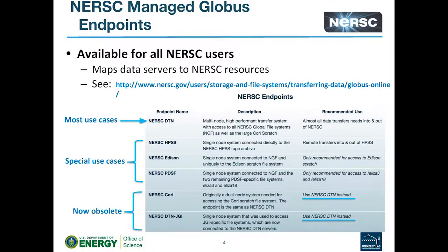There are a bunch of different endpoints, but most of the listed ones are no longer valid since we don't have Edison or PDSF anymore. You should just use the NERSC DTN nodes and the NERSC Cori nodes. If you're a JGI user, you can use the DTN JGI node, but at this point most of the others are obsolete.